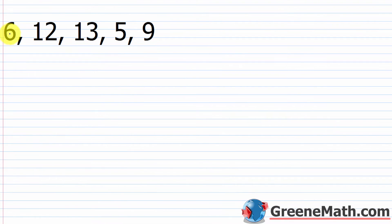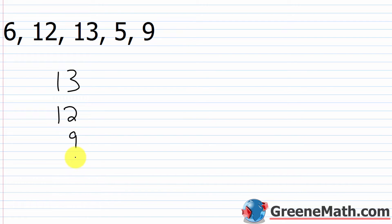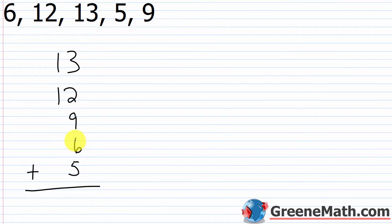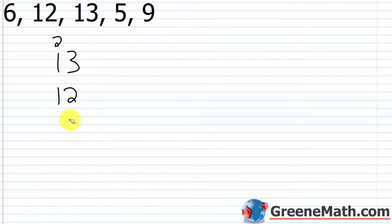So find the mean — you could say find the average; those two words are interchangeable. We have our numbers: 6, 12, 13, 5, and 9. I need to find the sum first. Using vertical addition, I'll put the two-digit numbers on top: 13, then 12, then 9, then 6, then 5. Adding up: 3+2=5, +9=14, +14+6=20, +5=25, put down 5, carry 2. 2+1=3, +1=4. The sum is 45.